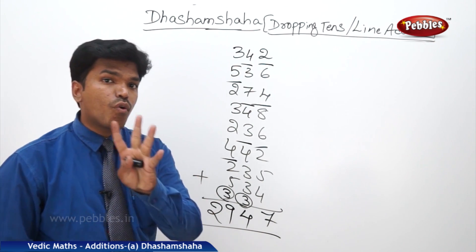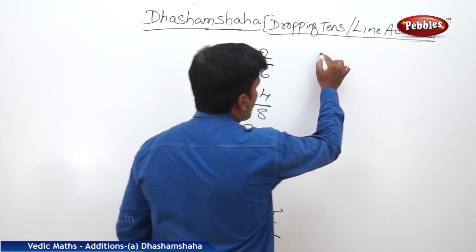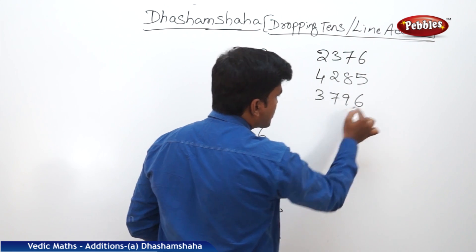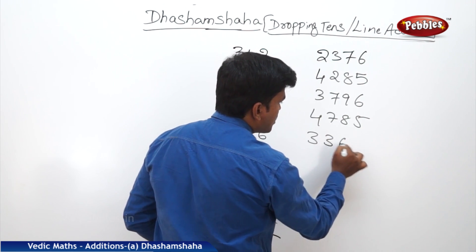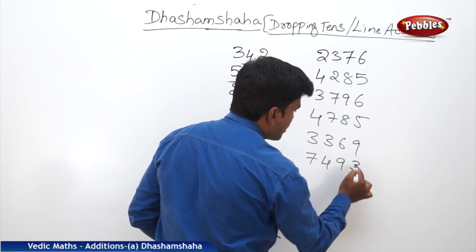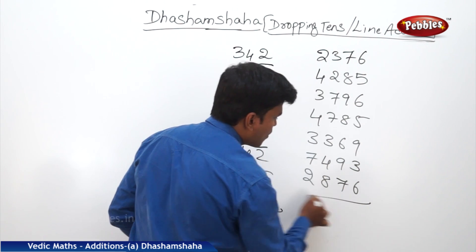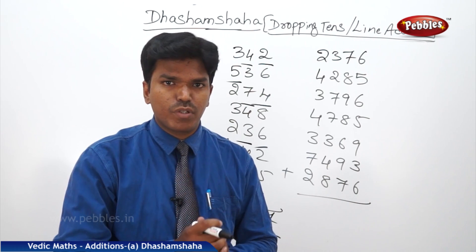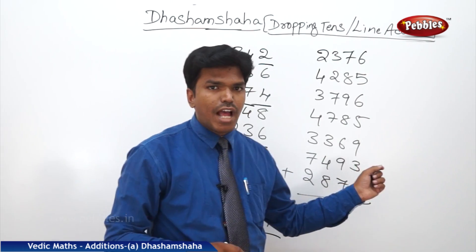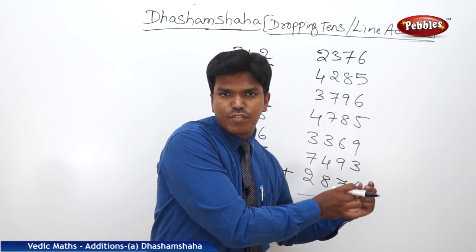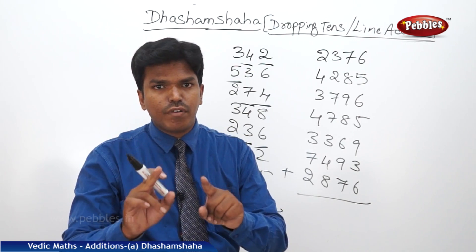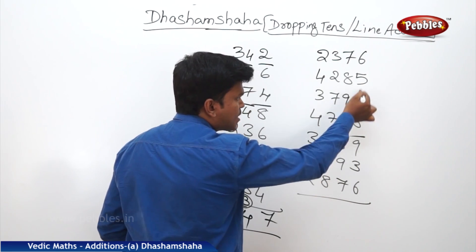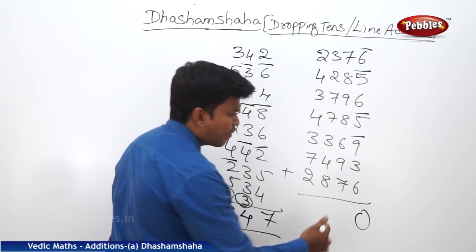Similarly, let us take a 4-digit example: 2376, 4285, 3796, 4785, 3369, 7492, 8763, 2876. Now let us add this one. This time I will go a little fast — you need to follow. Remember, I will say only the remaining after dropping a 10, not the full sum. Start from the rightmost column: 6, 3 → 9. 9, 8 → 5 (drop 10). 5, 3 → 8 (drop 10). 8, 5 → 3 (drop 10). Continuing to 0. How many 10s? 4 tens. Carry 4.